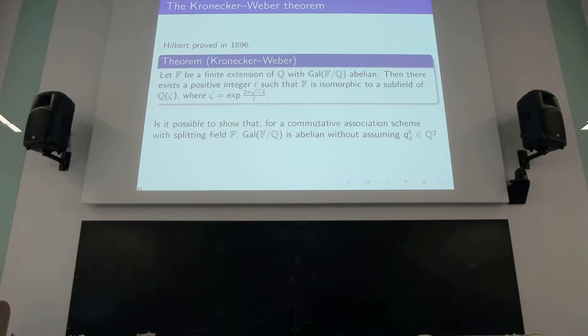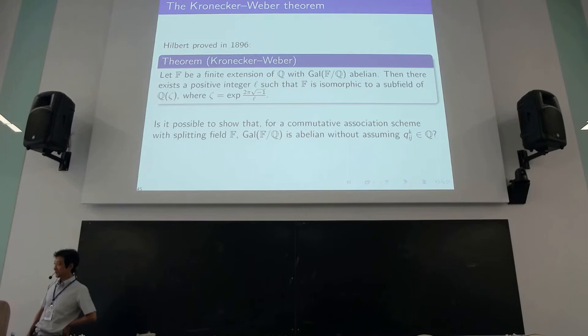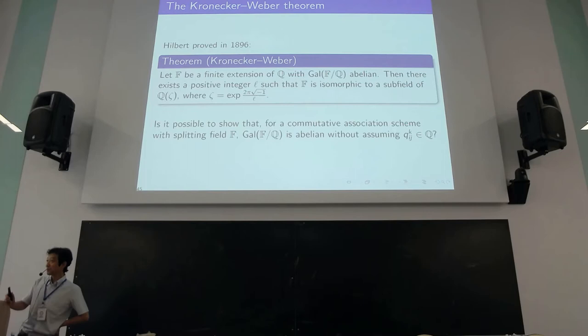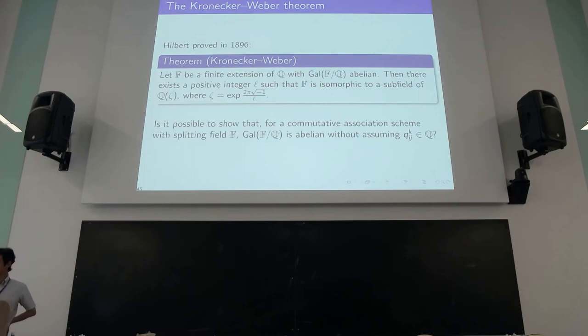The Kronecker-Weber theorem states: if you have a finite Galois extension of the rationals whose Galois group is abelian, then there exists a positive integer L such that this field F is a subfield of Q(ζ_L). So they are cyclotomic numbers. Still, I haven't solved the full open problem, because the problem remains whether for an arbitrary commutative association scheme the splitting field F has abelian Galois group. I showed it is abelian if the Krein parameters Q_ijk are rational, but in general there are association schemes with irrational Krein parameters.